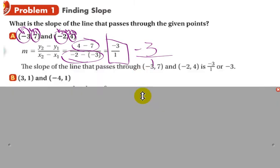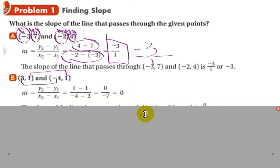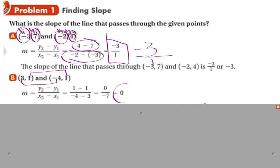Now, here's 1, 3, 1, and negative 4, 1. So, again, you're going to have 1 minus 1 over negative 4 minus 3. So, you end up with 0 over negative 7. And that's a valid number. That's like saying I've got a slope of 0.